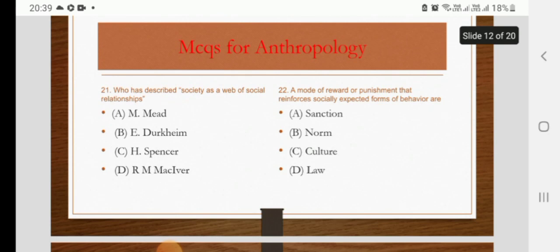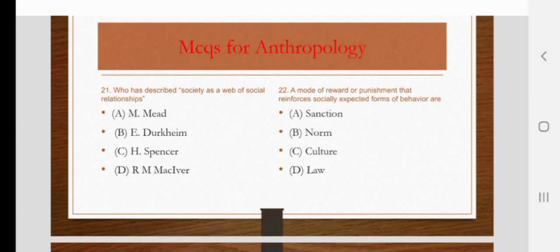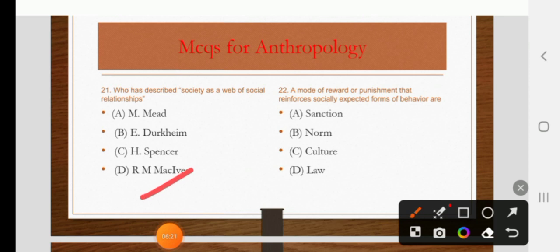Who has described society as a web of social relationships? Options are Margaret Mead, Emile Durkheim, Herbert Spencer, or R.M. MacIver. The right answer is D: R.M. MacIver.